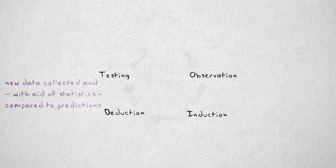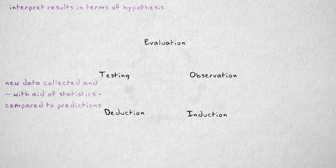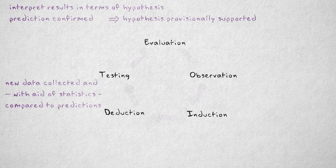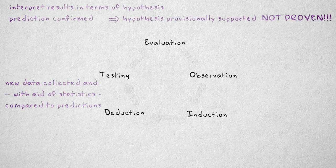In the evaluation phase, we interpret the results in terms of our hypothesis. If the prediction was confirmed, this only provides provisional support for a hypothesis. It doesn't mean that we've definitively proven the hypothesis, because it's always possible that in the future we will find somebody who just loves their mother-in-law.